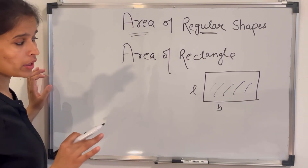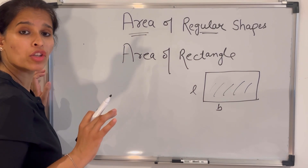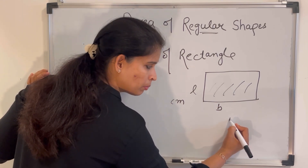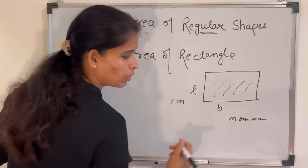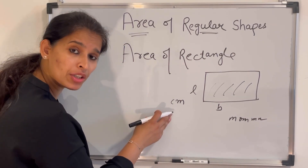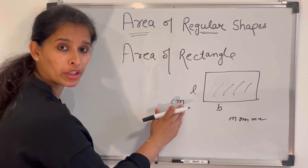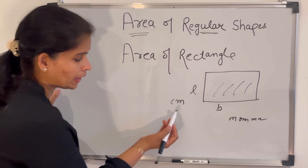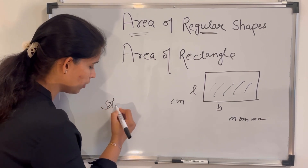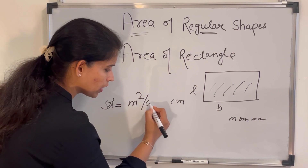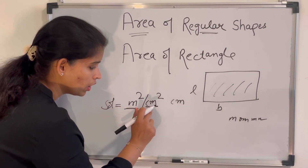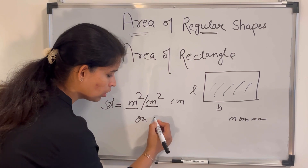Units play a very important role. Suppose the length is in centimeters and the breadth is in meters or millimeters. First, we will change our unit to one common unit. If it is in millimeters, you can convert it into centimeters. Always keep in mind that units should be the same, and the result will be in square meters or square centimeters — whatever unit is mentioned for length and breadth.